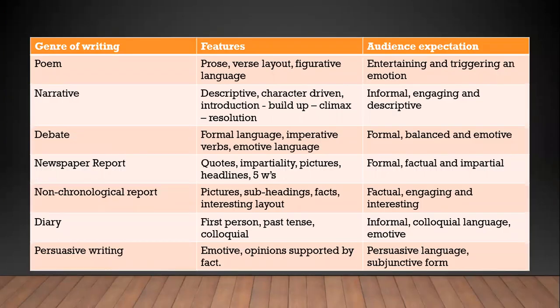Here's a bit of a breakdown that might help you. We've got different genres of writing — there are more than I've listed, but these are some of the main ones we use, particularly in school — their features and what the audience is expecting. For example, a poem should be written in prose: it's not written as a narrative, not in full sentences, not necessarily in paragraphs. It's laid out in verses and uses lots of figurative language. The audience expects to be entertained and for the poem to trigger some form of emotive response — whether that's making them sad, making them laugh, or making them happy.